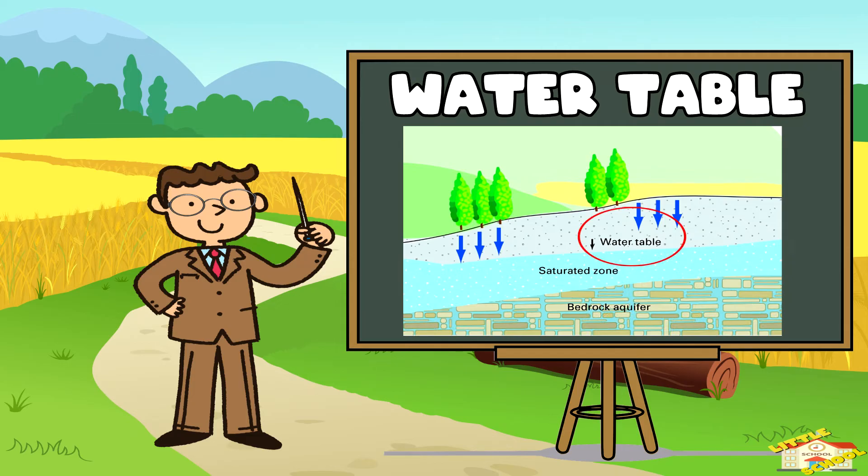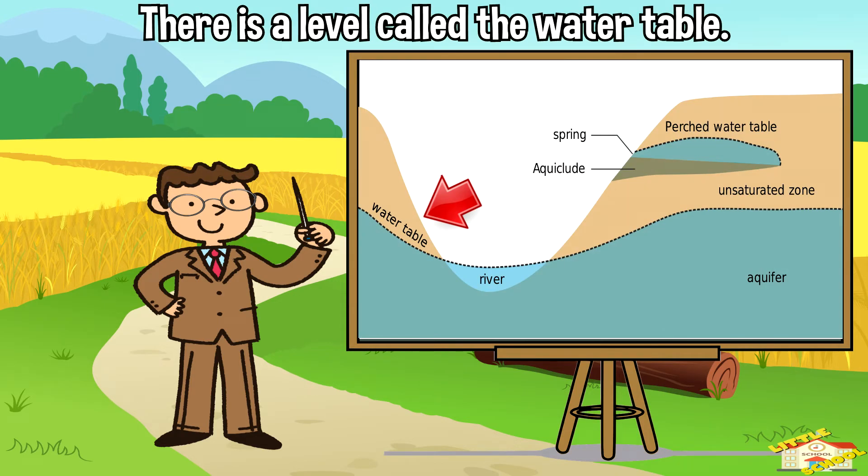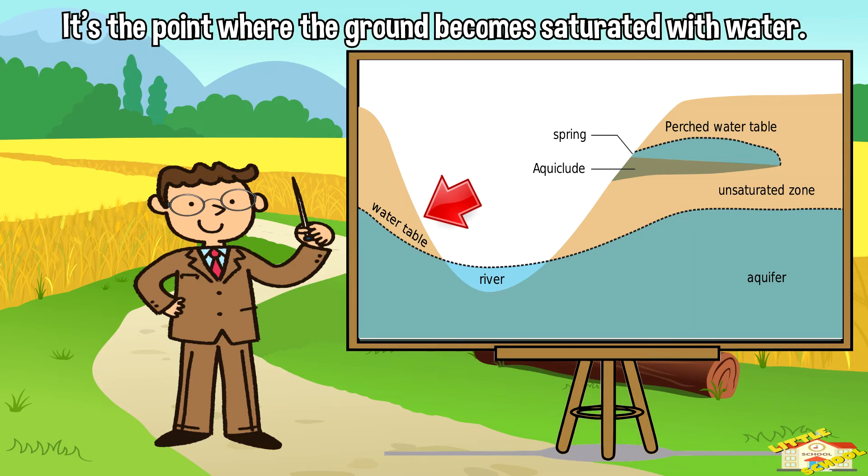Water table: Deeper beneath the Earth's surface, there is a level called the water table. It's the point where the ground becomes saturated with water.